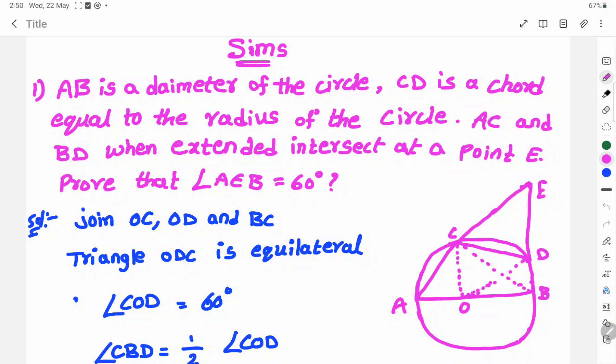Hi, welcome to CIMS. Today's sum: AB is a diameter of the circle, CD is a chord equal to the radius of the circle. AC and BD when extended intersect at a point E.